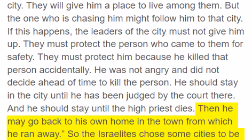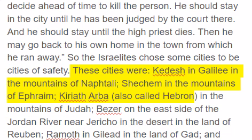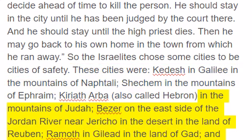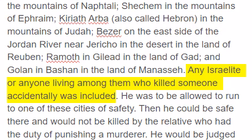So the Israelites chose some cities to be cities of safety. These cities were Kadesh in Galilee in the mountains of Naphtali, Shechem in the mountains of Ephraim, Kiriath Arba also called Hebron, in the mountains of Judah, Bezer on the east side of the Jordan River near Jericho in the desert in the land of Reuben, Ramoth in Gilead in the land of Gad, and Golan in Bashan in the land of Manasseh.